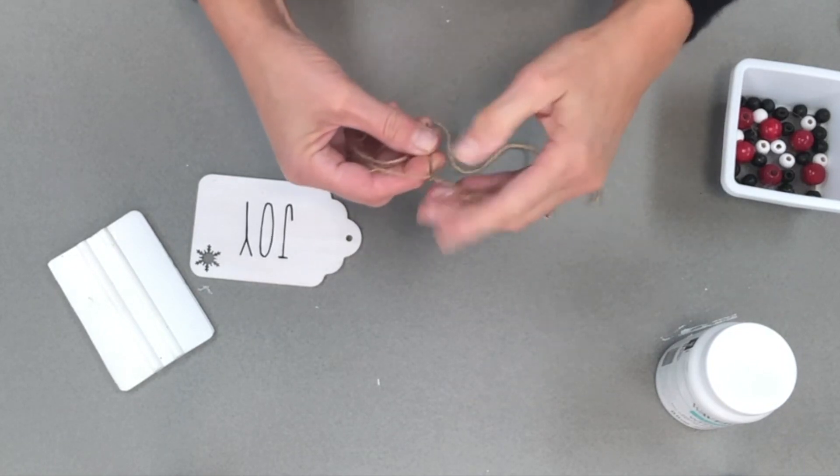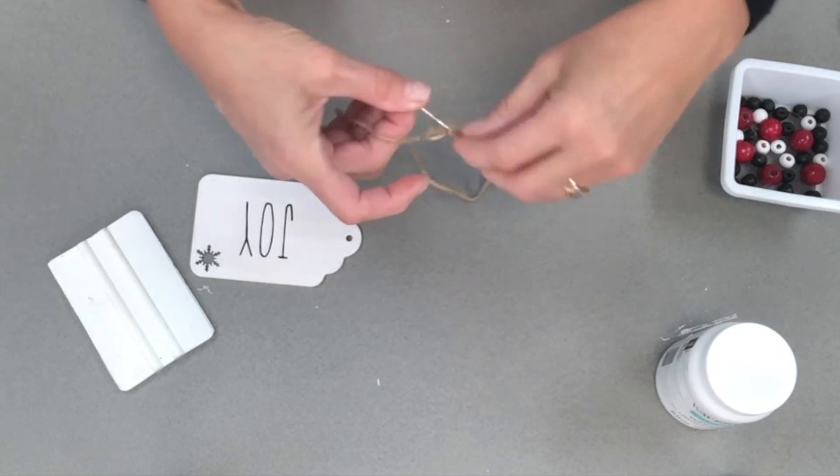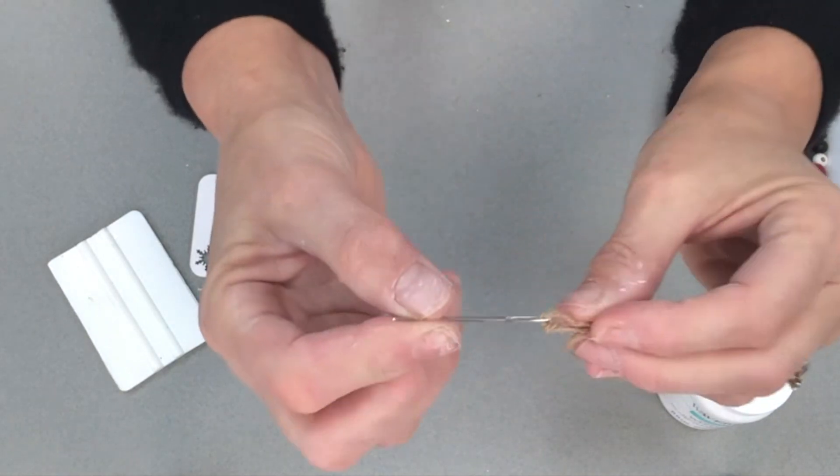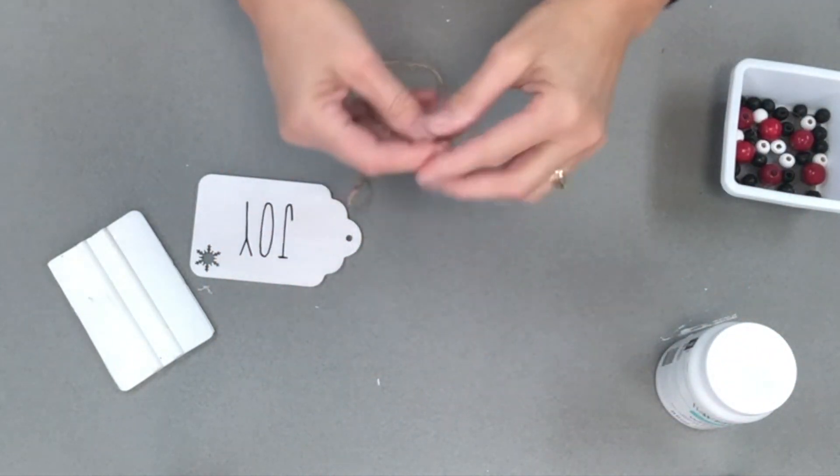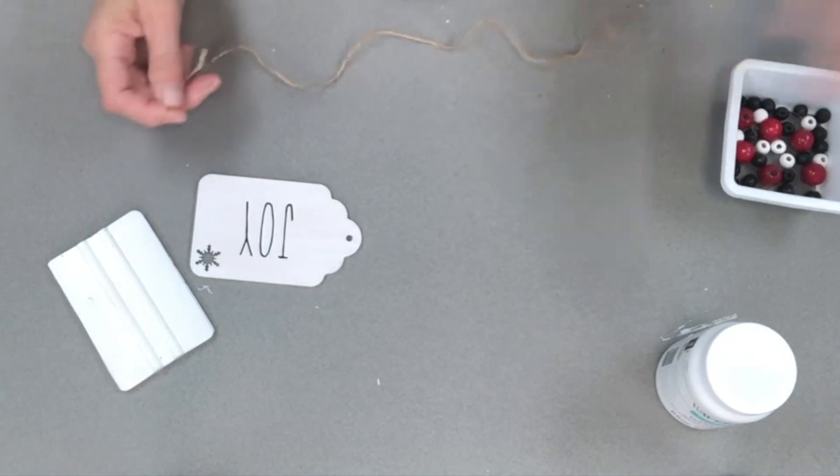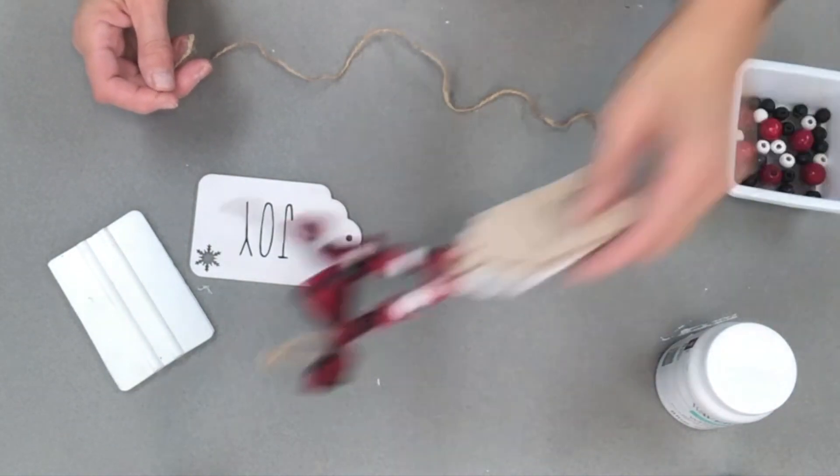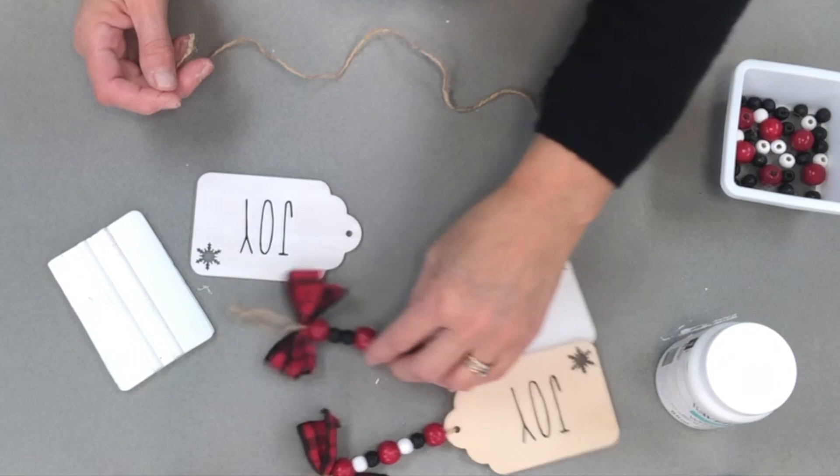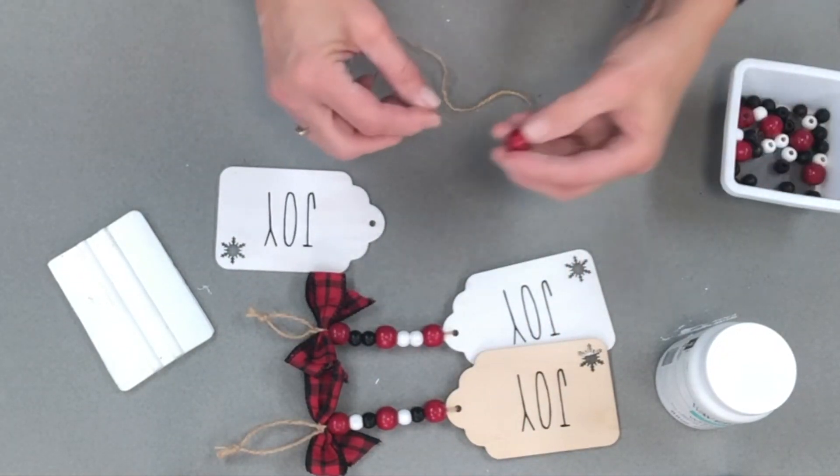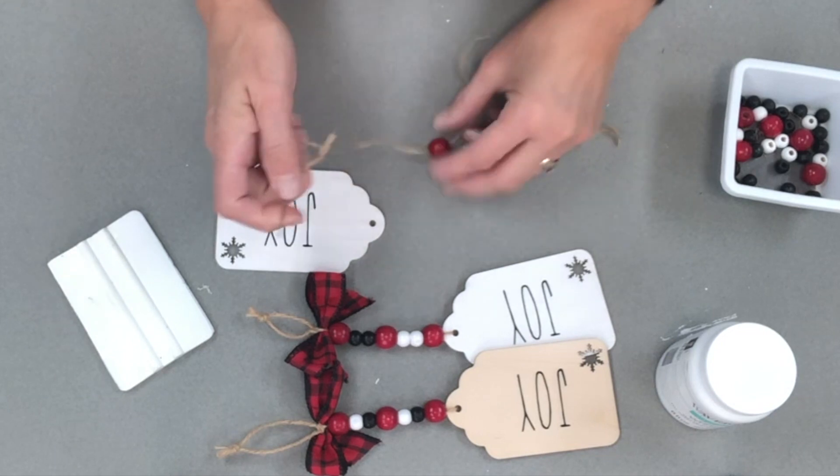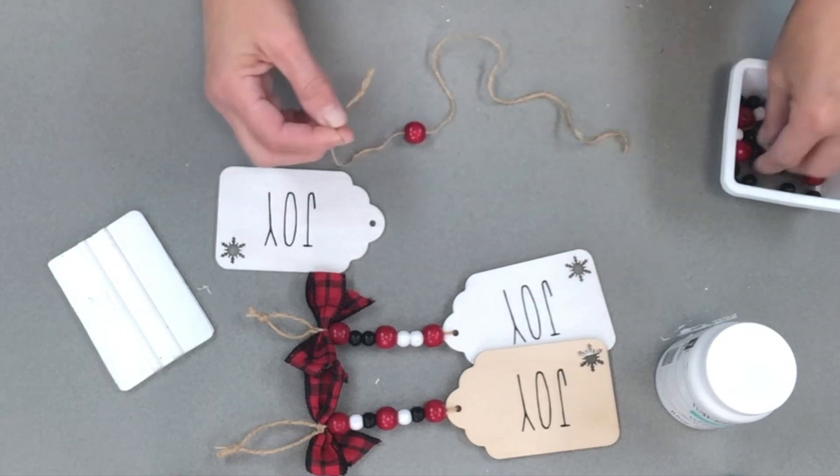So I've just threaded my twine on a darning needle. And when I say a darning needle, it is a needle with a very large eye. So you guys can see that has got a nice size eye to it so that the twine is going to be able to get through. And then you kind of just need to decide how you want your beads to go.